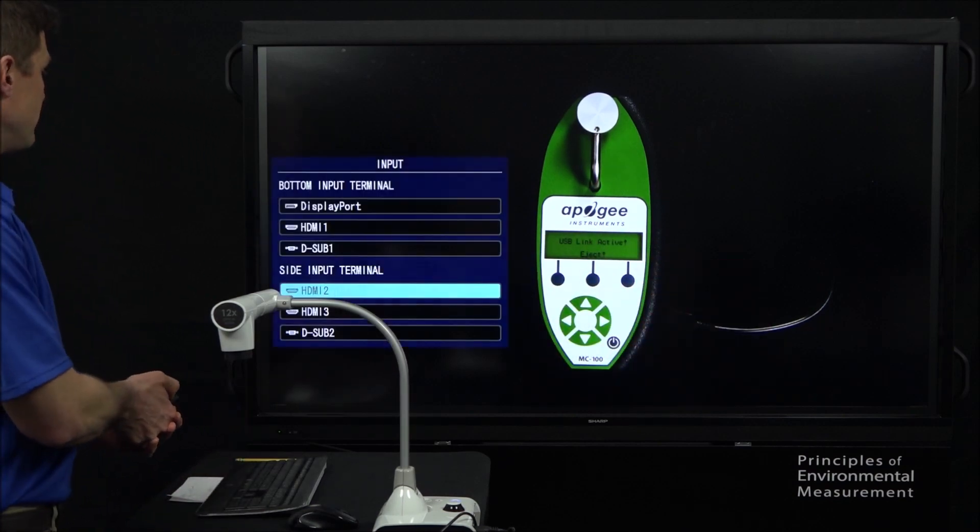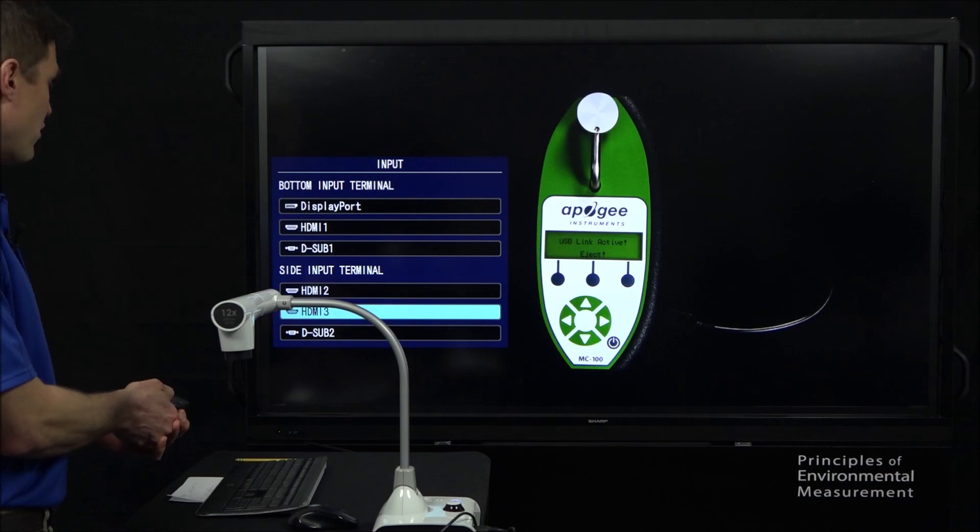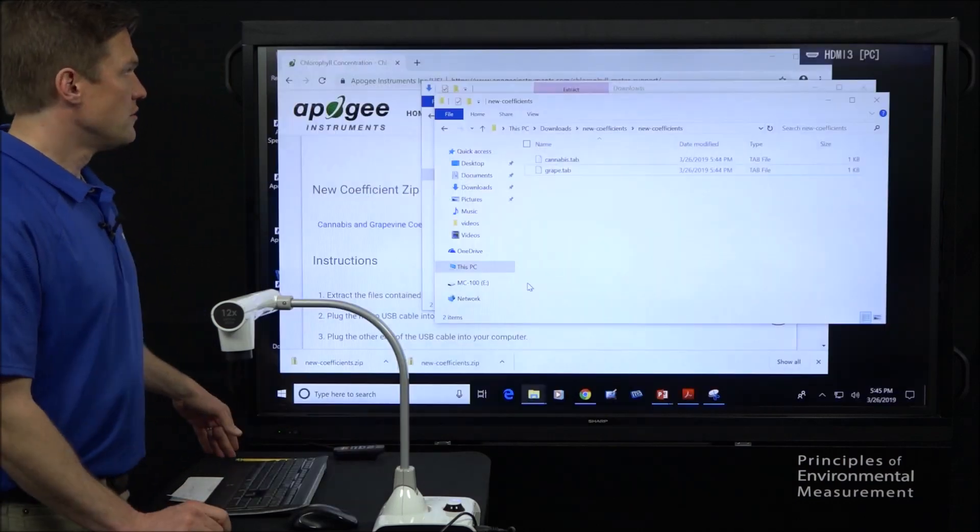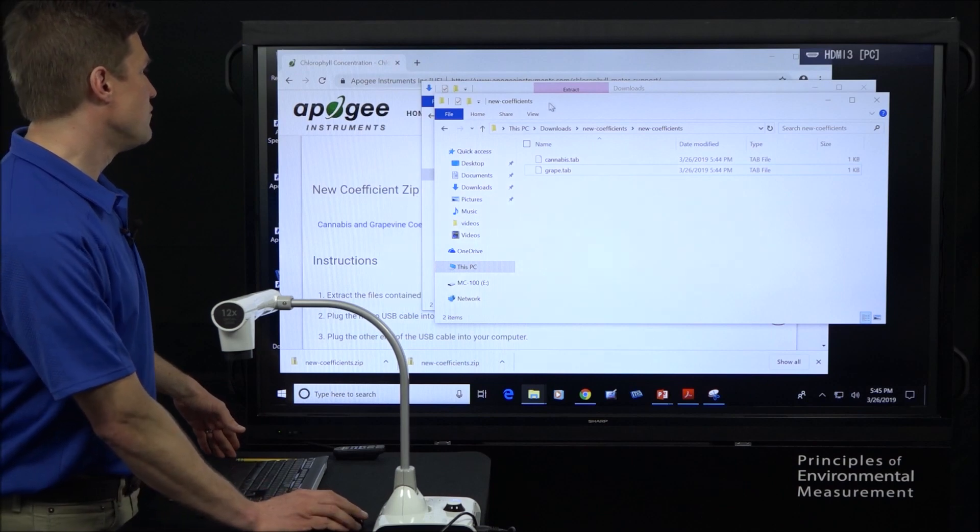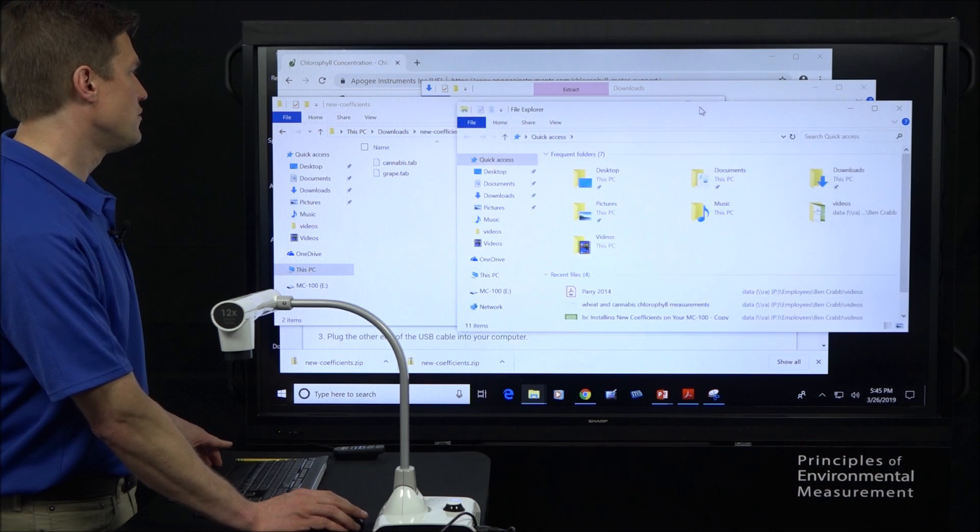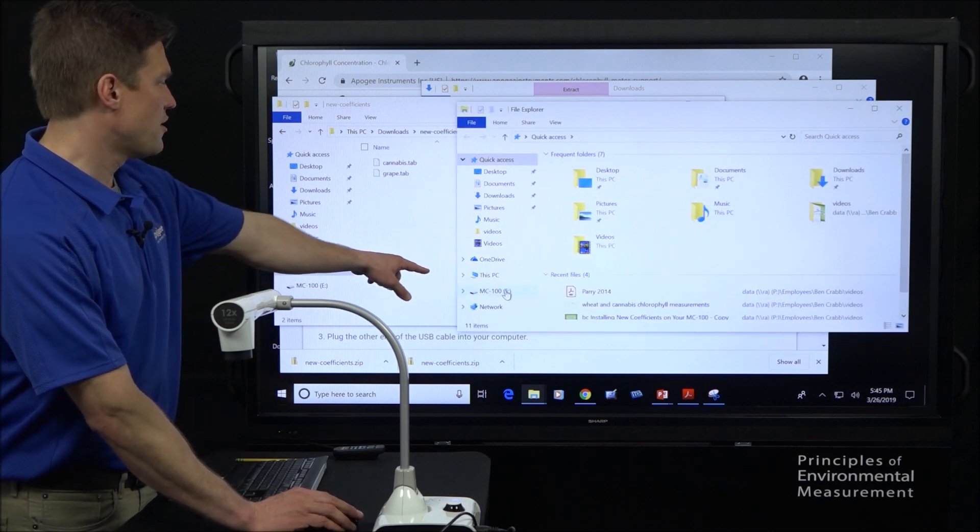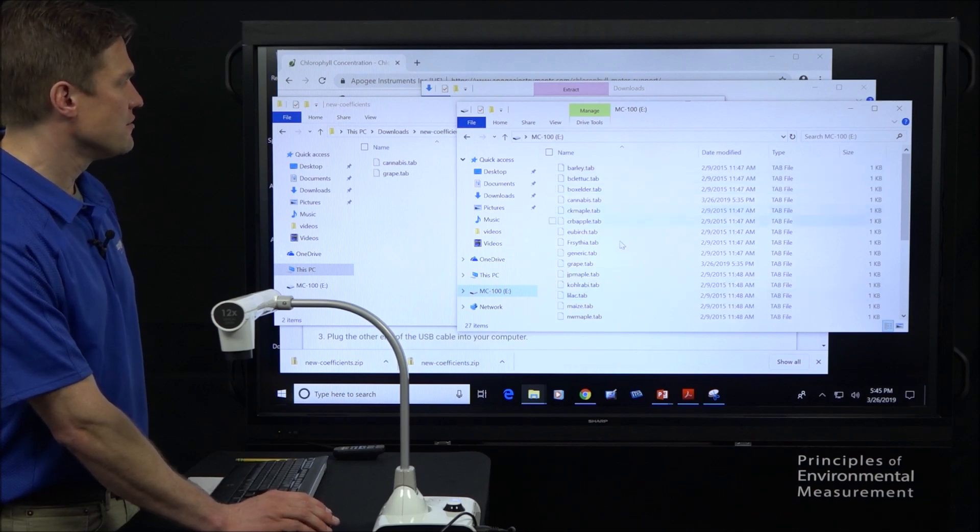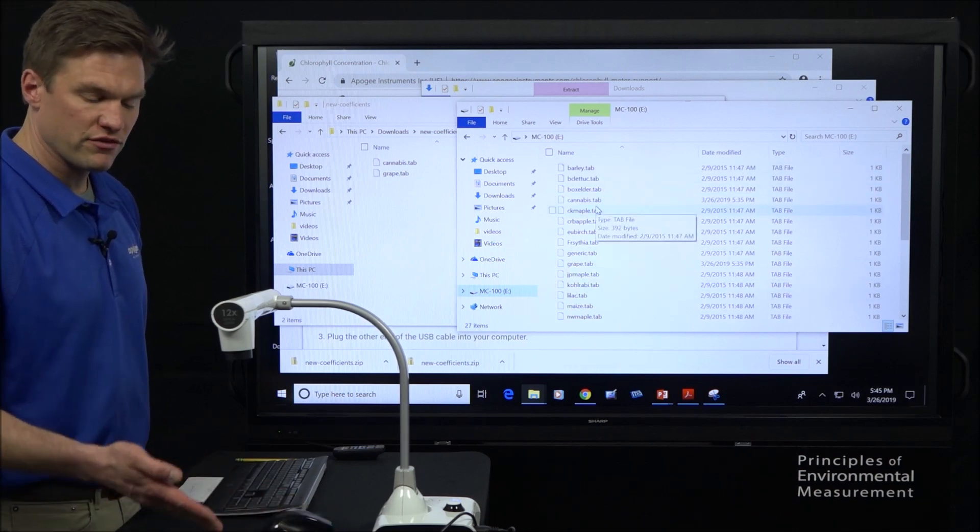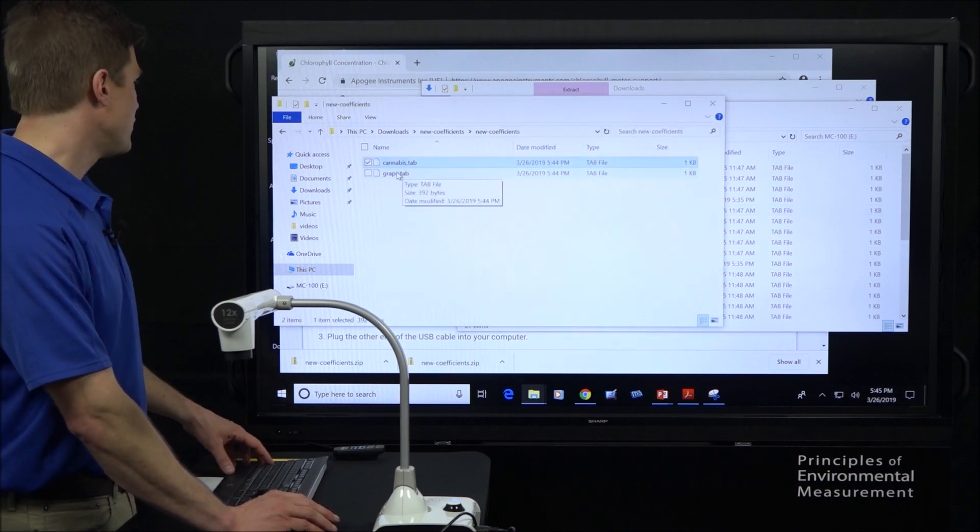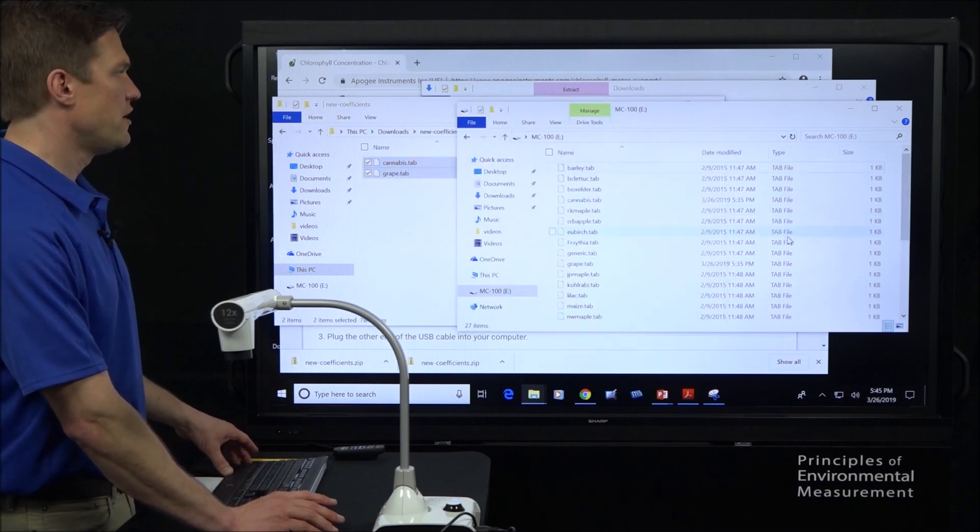Okay, so this means that it is connected to the computer and you ought to be able to access the relevant folder now. So switching back over to the computer view, we'll open up another explorer window and we can see we have an option, MC100. So you open this up and you see a bunch of other .tab files for all the other species that have coefficients already loaded onto the meter. So all we're going to do, we're going to take these two files and we're going to drag them in.